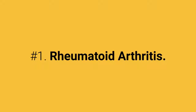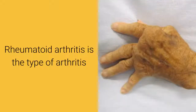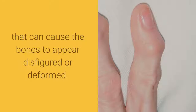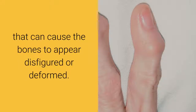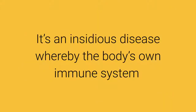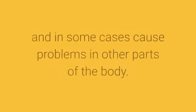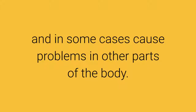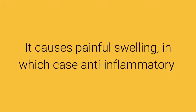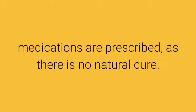Number 1: Rheumatoid Arthritis. Rheumatoid arthritis is the type of arthritis that can cause the bones to appear disfigured or deformed. It's an insidious disease whereby the body's own immune system attacks the joints and surrounding tissues, and in some cases causes problems in other parts of the body. It causes painful swelling, in which case anti-inflammatory medications are prescribed, as there is no natural cure.